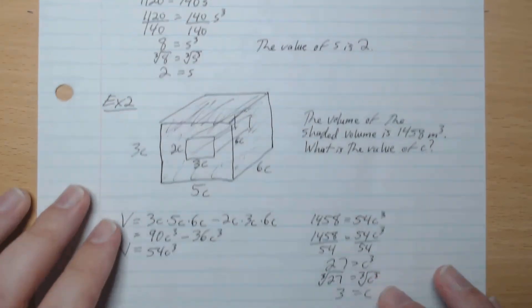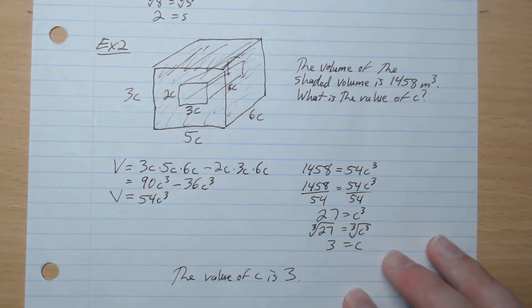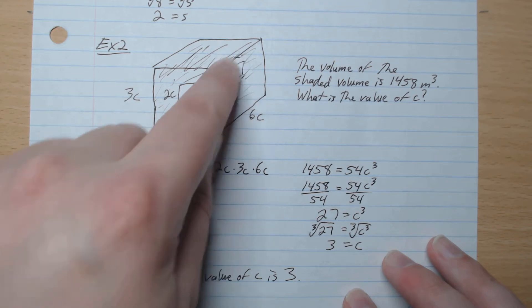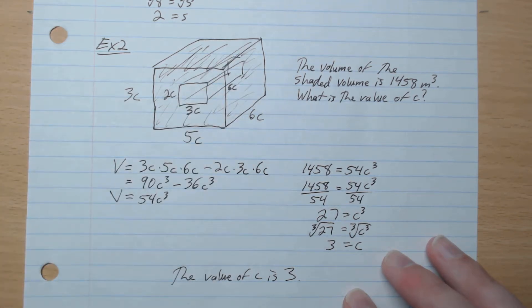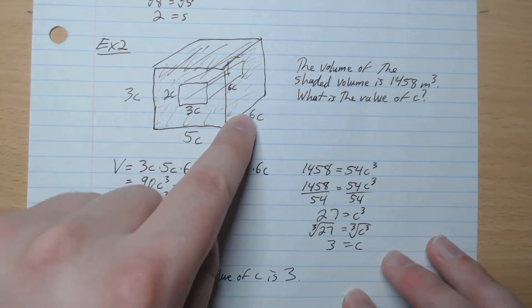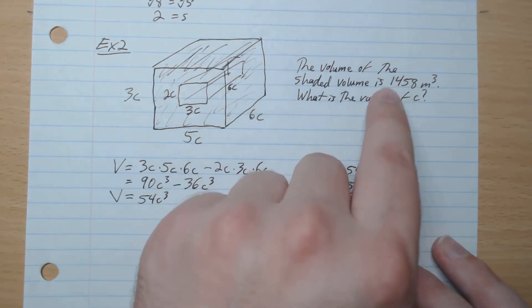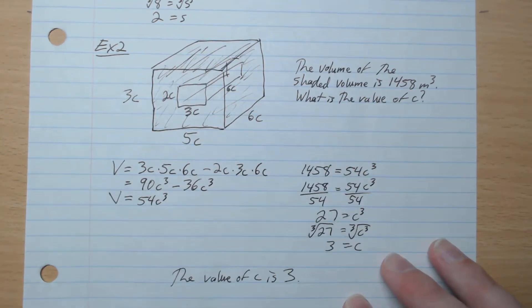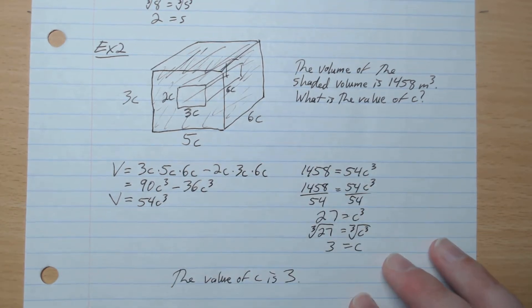Example 2. Here we have a rectangular prism, and we have a hole inside this rectangular prism. And so the volume of the shaded area, which is the volume around the hole, the volume is 1458 m³. The question, what is the value of c?